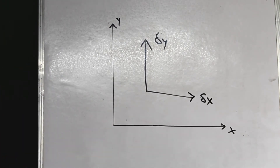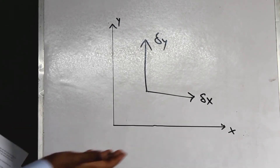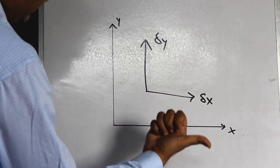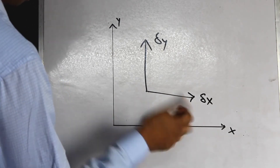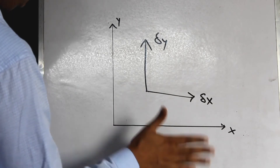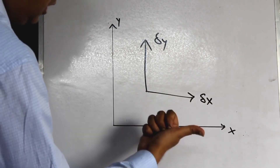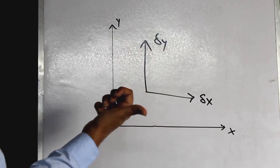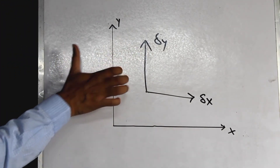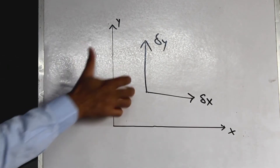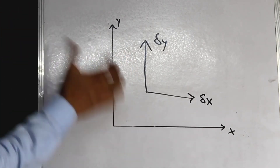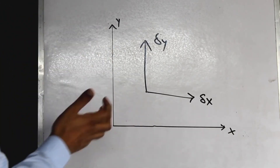Now let us think about the rotational degrees of freedom. Consider the rotation about the x-axis — this is something that I cannot draw on this plane. So theta x, the rotational degree of freedom about the x-axis, is an out-of-plane degree of freedom. Thinking about the rotation about the y-axis, I cannot draw it either on the board, and thus this is also an out-of-plane degree of freedom.